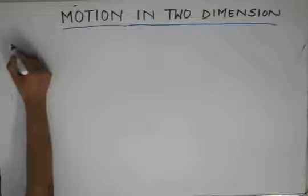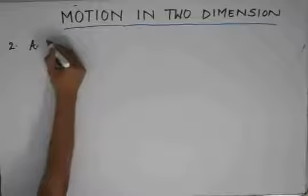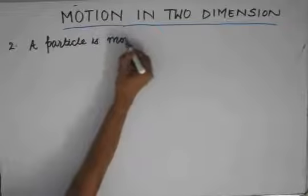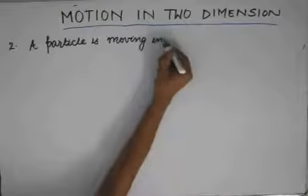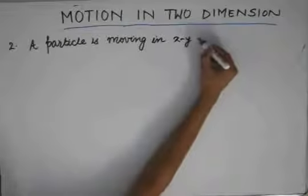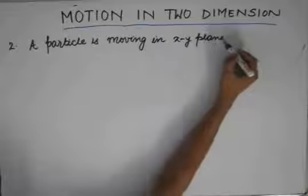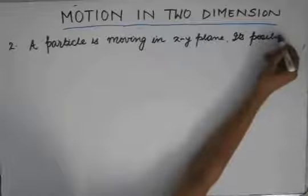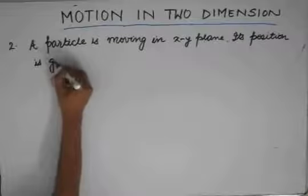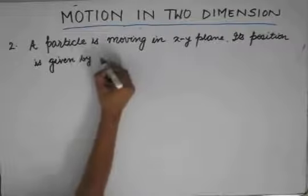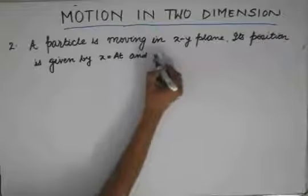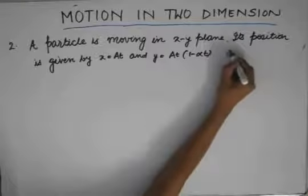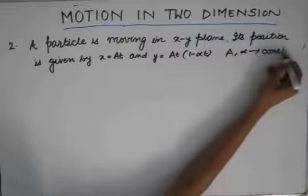The second problem is again based on motion in two dimensions. A particle is moving in the xy plane, so its position is based on motion in two dimensions. Its position at any instant t is given by x equals at and y equals at times (1 minus alpha t), where a and alpha are constants and t is the time.